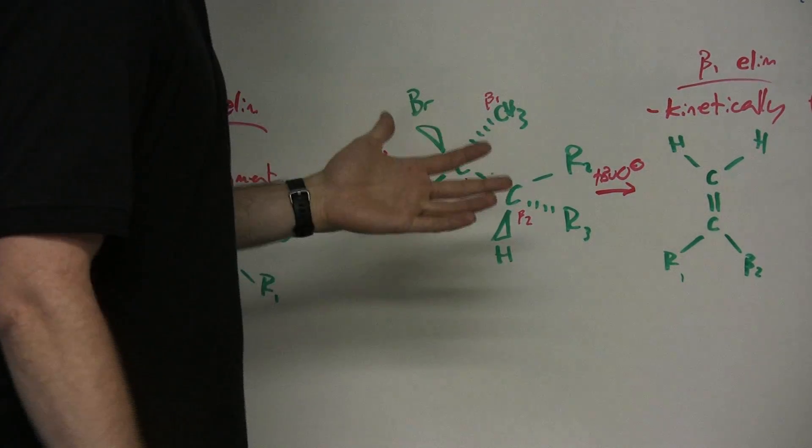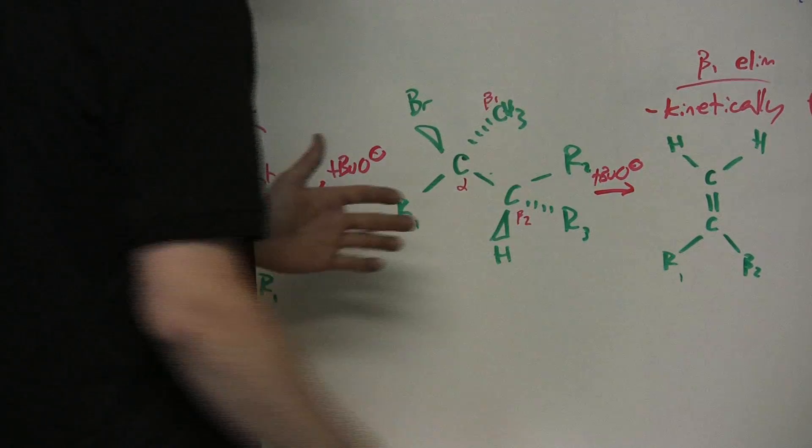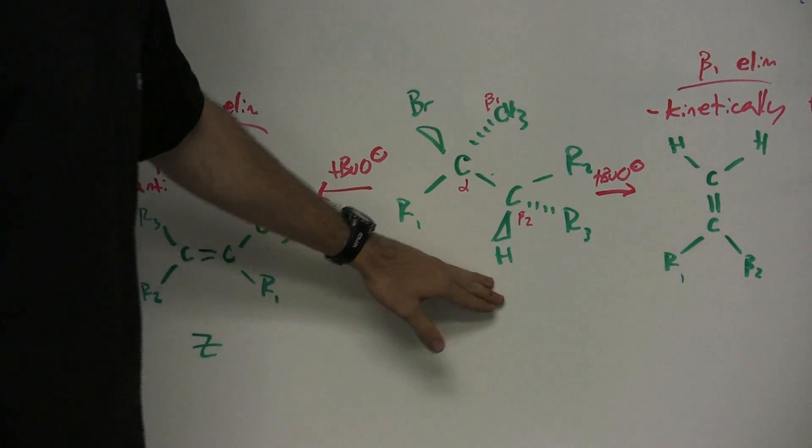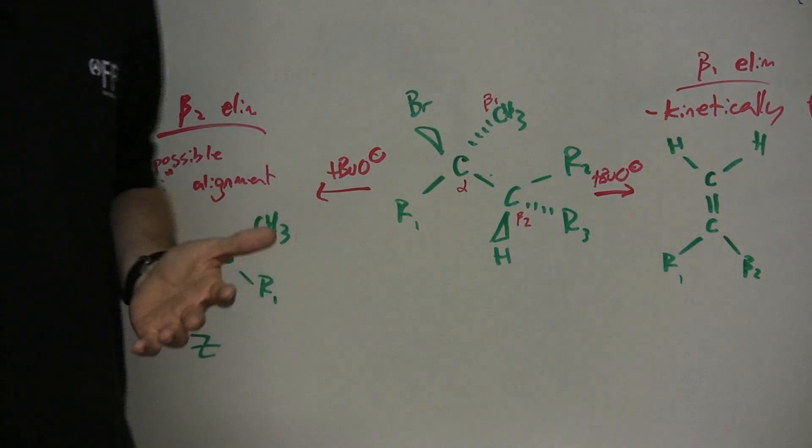This beta carbon, we'll call it beta 1. This has three Hs off it. It's a CH3. This beta carbon, beta 2, only has one H. So you'll notice that there's a difference in these beta carbons.